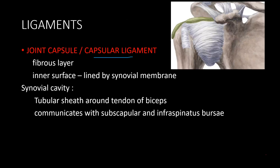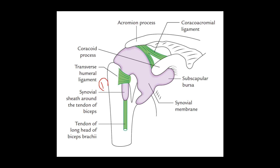The capsular ligament is fully lined by the synovial membrane, forming a synovial cavity. The synovial membrane has three important features: first, it lines the joint capsule; second, it surrounds the tendon of the long head of biceps as it enters the capsule, fully covering it and forming a tubular sheath around the tendon.